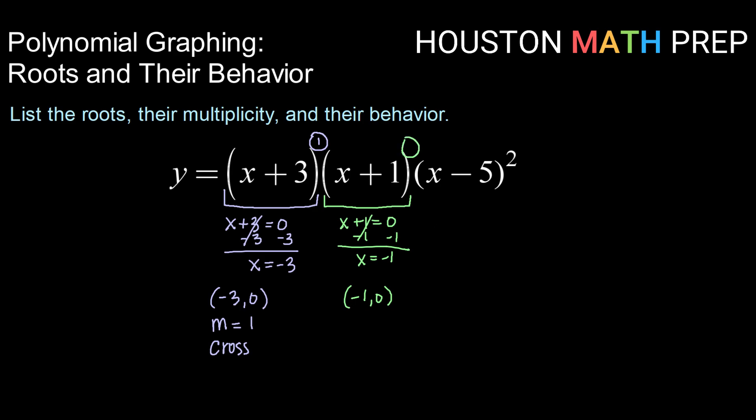Looking for our power on that one, since we don't see one, we know that's an understood multiplicity of 1. Odd multiplicity gives us cross behavior.